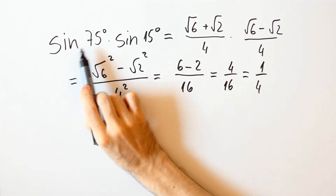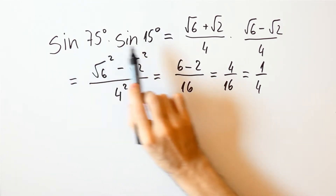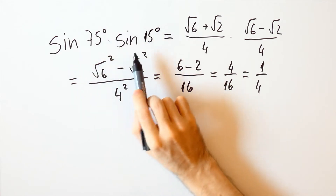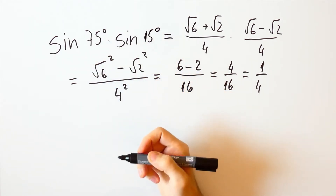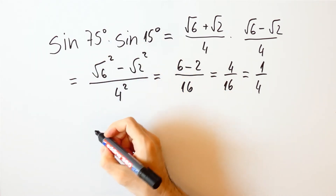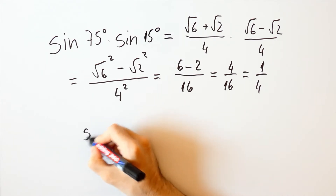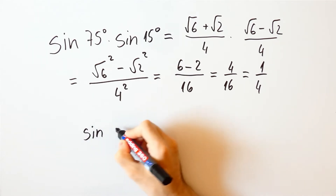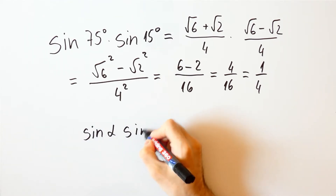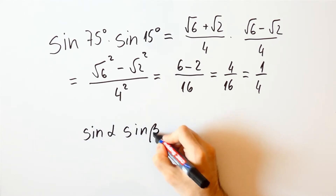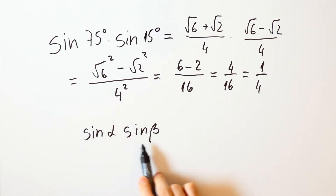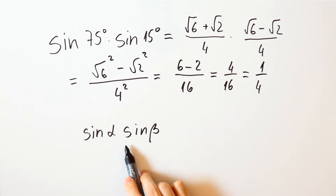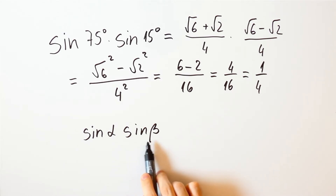But did we have to know the sines of 75 degrees and of 15 degrees to calculate this? Well, no we didn't, and for that purpose we'll derive the formula for the sine of alpha times the sine of beta. And where did we see this before? We saw it in the formulas for cosine of alpha minus beta and alpha plus beta.